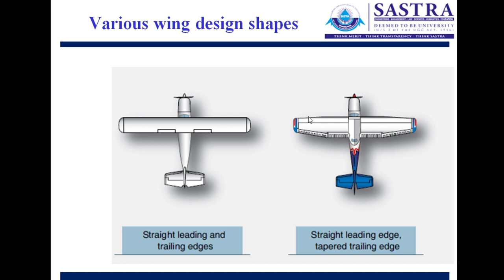Another design has a straight leading edge but a tapered-out trailing edge. This configuration is common in some early and modern transport aircraft and is also very well known in transport aviation.